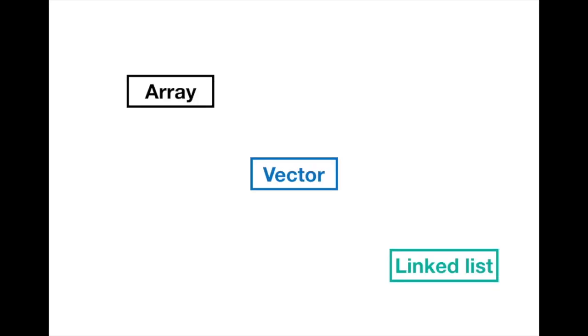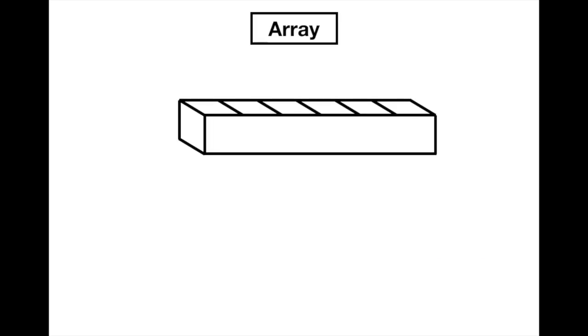I will show you how diverse container can be by looking at three containers that have already been taught in SIT 102. There are also the most basic types of containers: arrays, vectors, and linked lists. First, the simplest container, array.